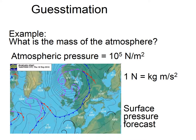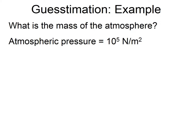So, an example: the mass of the atmosphere. All we're asking is to work out how much stuff is in the atmosphere, and we can guess that from just one piece of information — knowing what atmospheric pressure is. The mass of the atmosphere is simply related to the force of the atmosphere pushing down on the earth. The atmospheric pressure is 10⁵ newtons per meter squared.